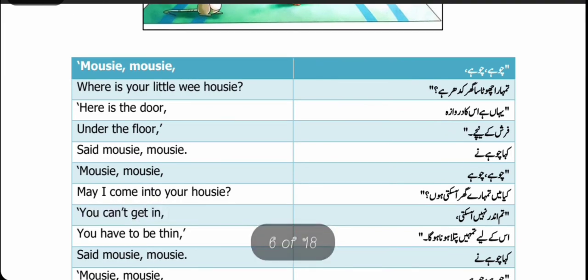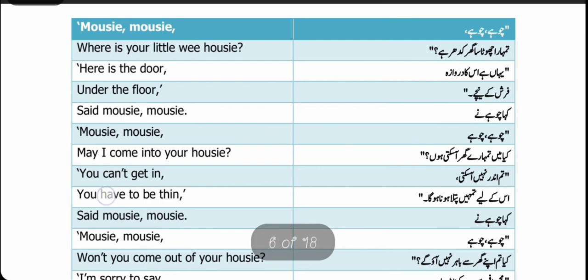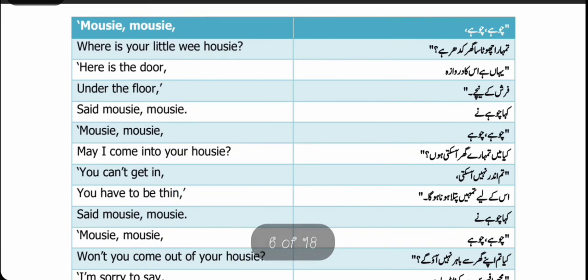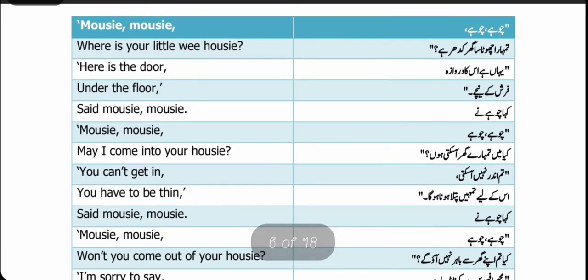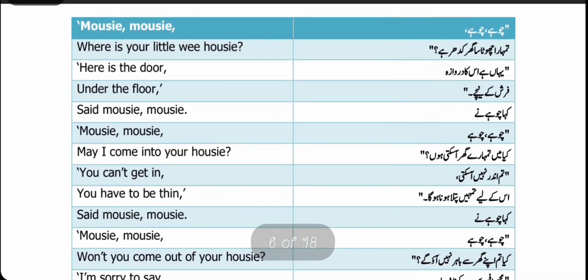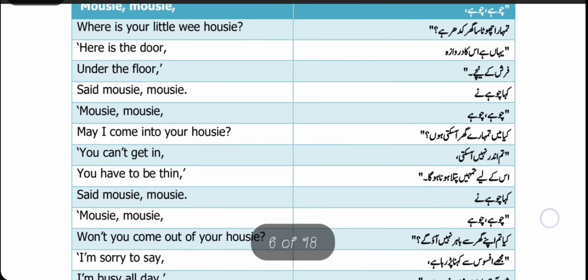You can't get in — تم اندر نہیں آ سکتی۔ You have to be thin — تمہیں پتلا ہونا پڑے گا — said Mousy, Mousy — کہا چوہے نے۔ ان لائنوں میں بلی چوہے کو کہتی ہے کہ کیا میں تمہارے گھر آ سکتی ہوں، چوہا اسے کہتا ہے کہ نہیں، تم نہیں آ سکتی کیونکہ اس کا گھر فرش کے نیچے ایک چھوٹا سا بل ہے جس میں وہ رہ رہا ہے اور بلی چونکہ فیٹ ہے تو وہ اس کے اندر نہیں جا سکتی — تو تمہیں پتلا ہونا پڑے گا۔